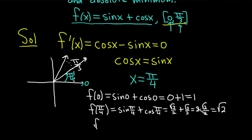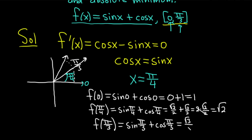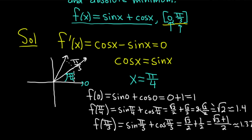Now let's do f of pi over 3. It's going to be sine of pi over 3 plus cosine of pi over 3. The sine of pi over 3 is square root of 3 over 2, and the cosine of pi over 3 is 1 half. This equals square root of 3 plus 1, all over 2. In decimal terms, the square root of 2 is approximately 1.4, and square root of 3 plus 1 over 2 is approximately 1.37. So the maximum is the square root of 2, and the minimum is 1.